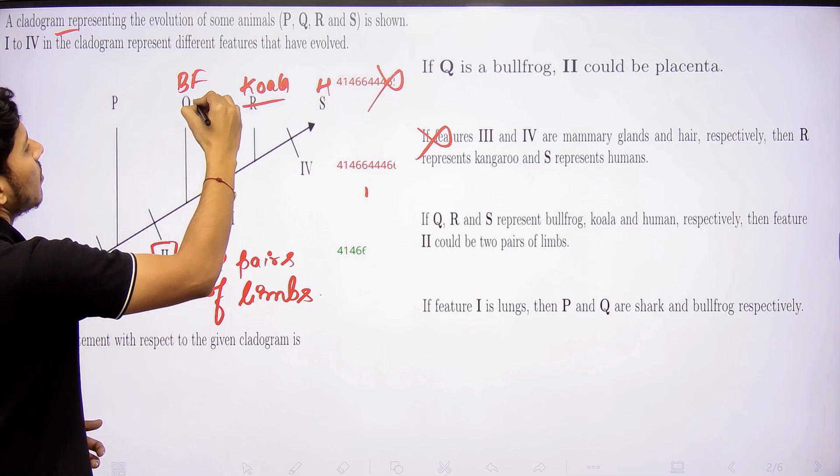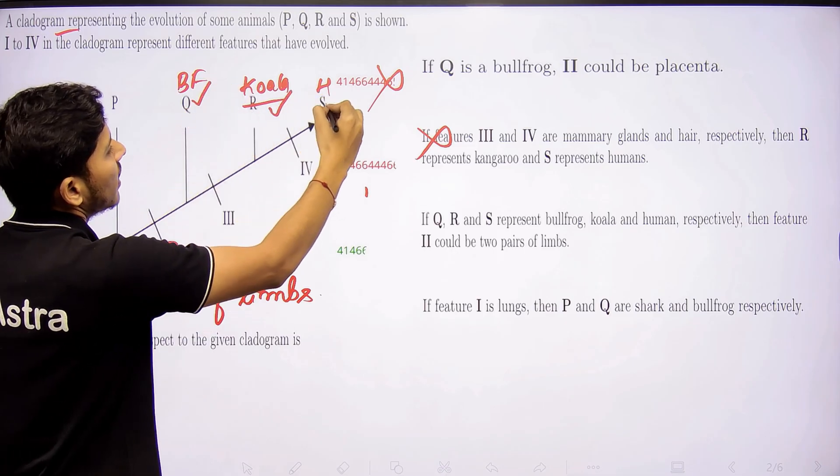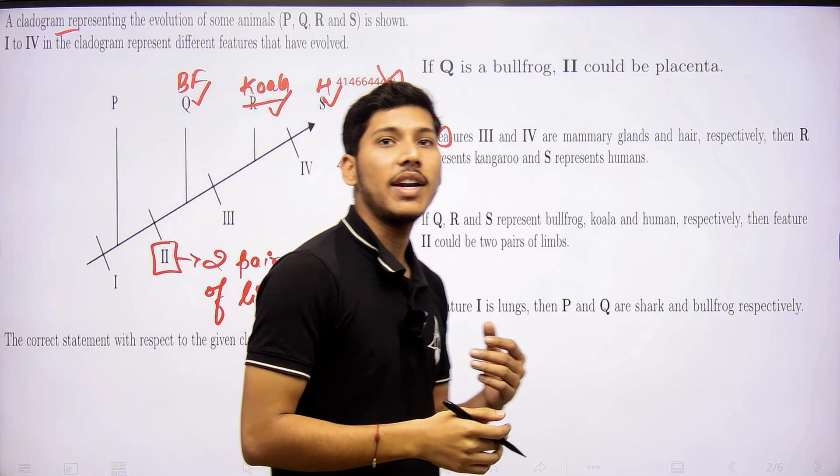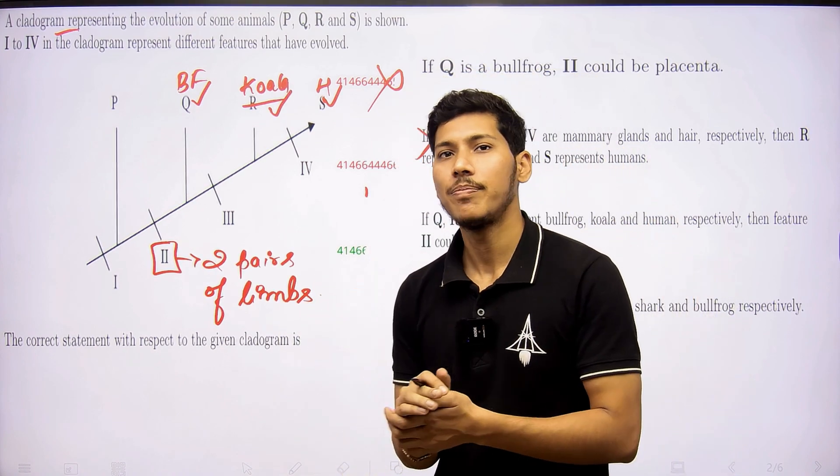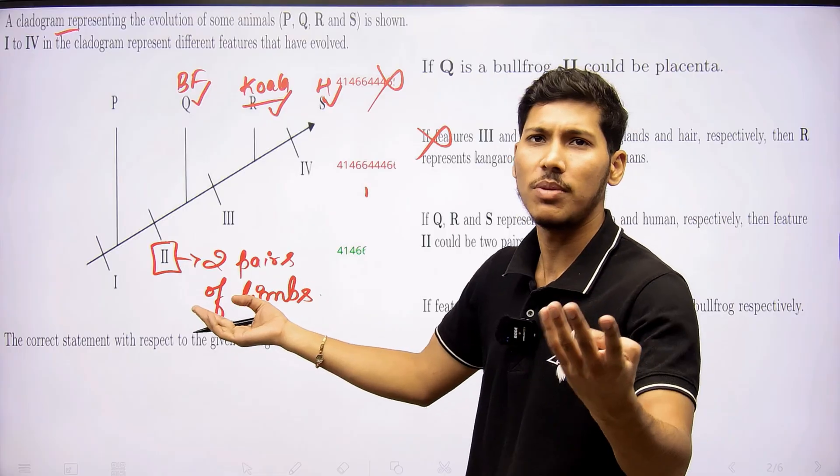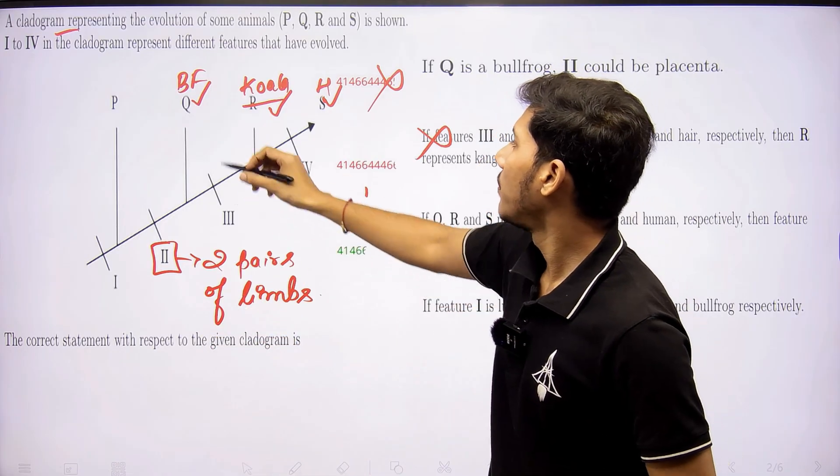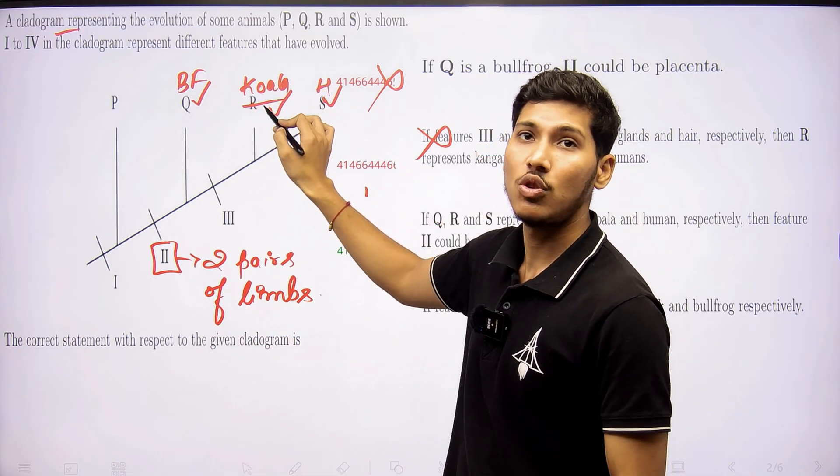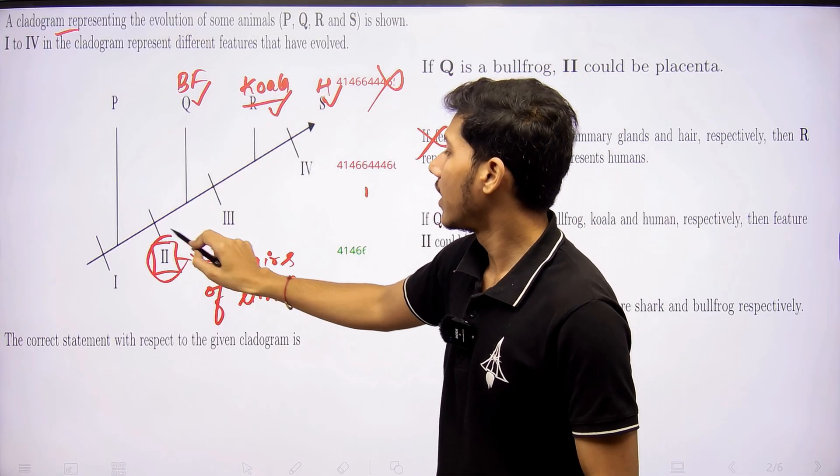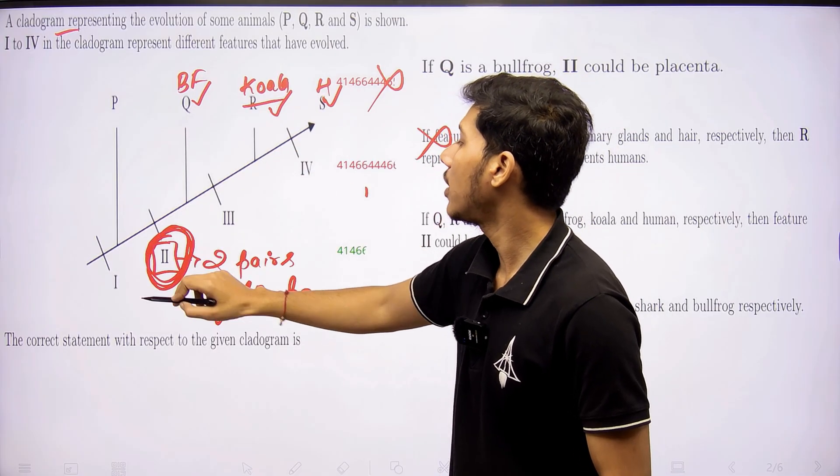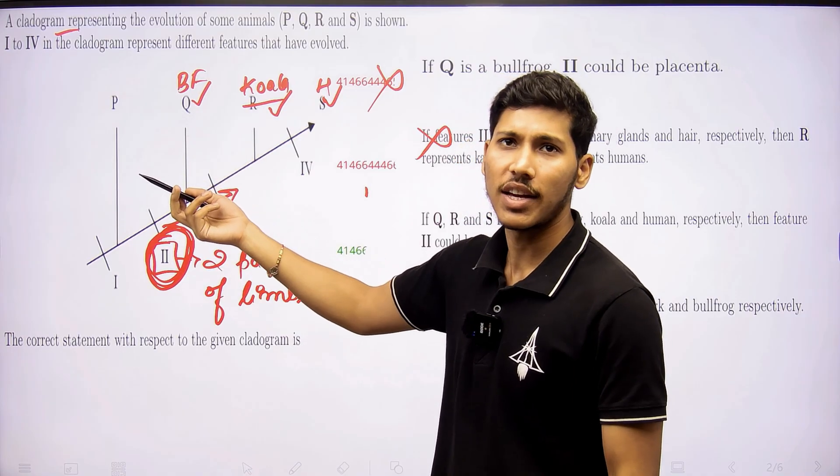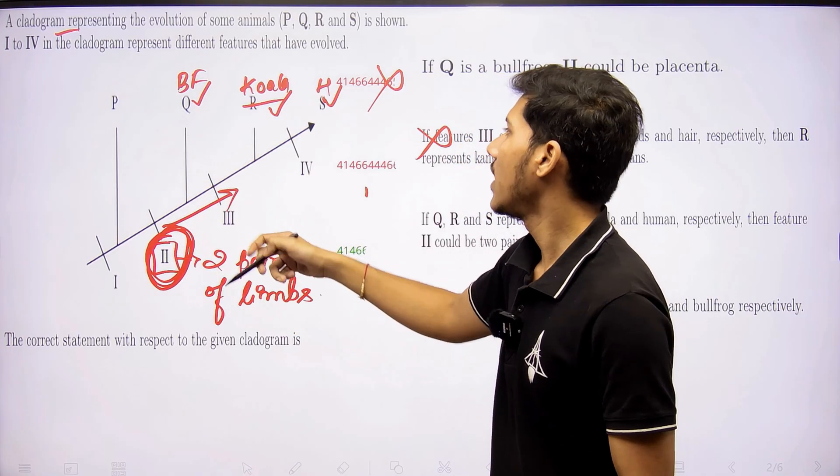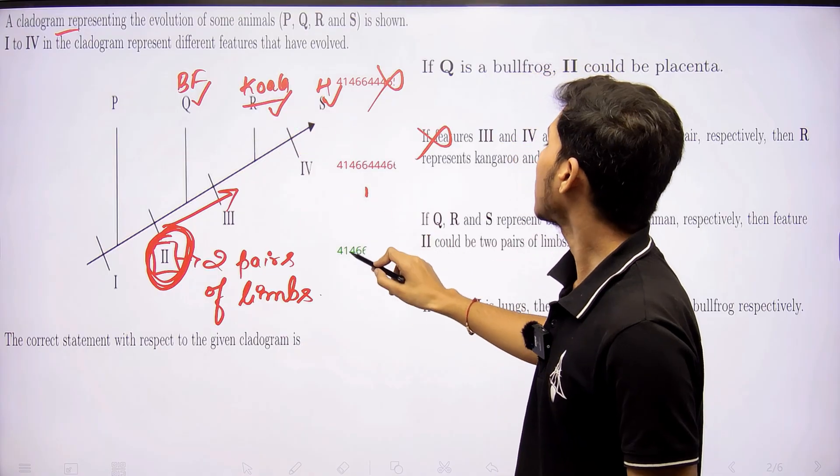Why? Because bullfrog, koala, humans, all of them contains what? 4 limbs. 2 pairs means 4 limbs. So that's why this is correct. Because all of them contains 2 pairs of limbs. And it is written here in the property number 2. So it means that all the organisms after 2 contains this thing, which is 2 pairs of limbs. That's why this statement is correct here.